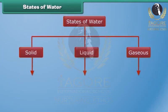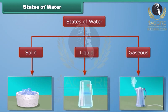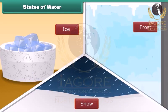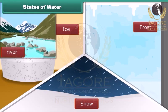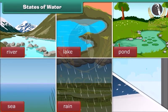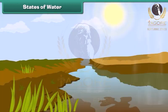Water exists in three states: solid, liquid and gaseous. Ice, snow and frost are examples of water in the solid state. You see liquid water in rivers, lakes, ponds, sea, when it rains, and the water coming out of a tap. Water vapor is a gas in the air — you can't see it because it is invisible.